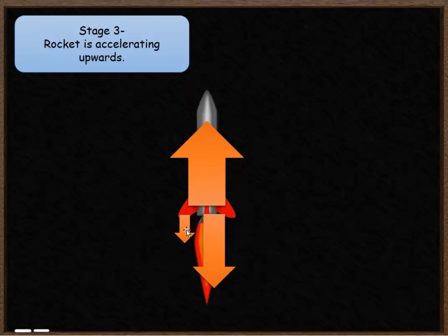We also have another force acting on the rocket in the downwards direction. This force is air resistance. The rocket's accelerating, so it's getting faster going upwards. As it gets faster, this force of air resistance is going to start to get bigger.